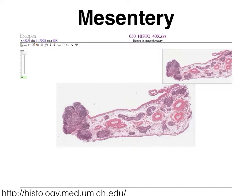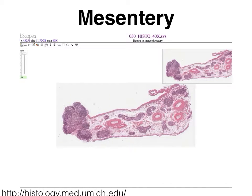We're going to use the exact same slide, called the mesentery, that we used to learn about mesothelium. Remember that mesothelium was located on the surface of this specimen. This time, however, we're going to take a look at what is lining the lumen of all of these blood vessels — any blood vessels, larger blood vessels, and very small ones that you can barely see on this very low magnification.